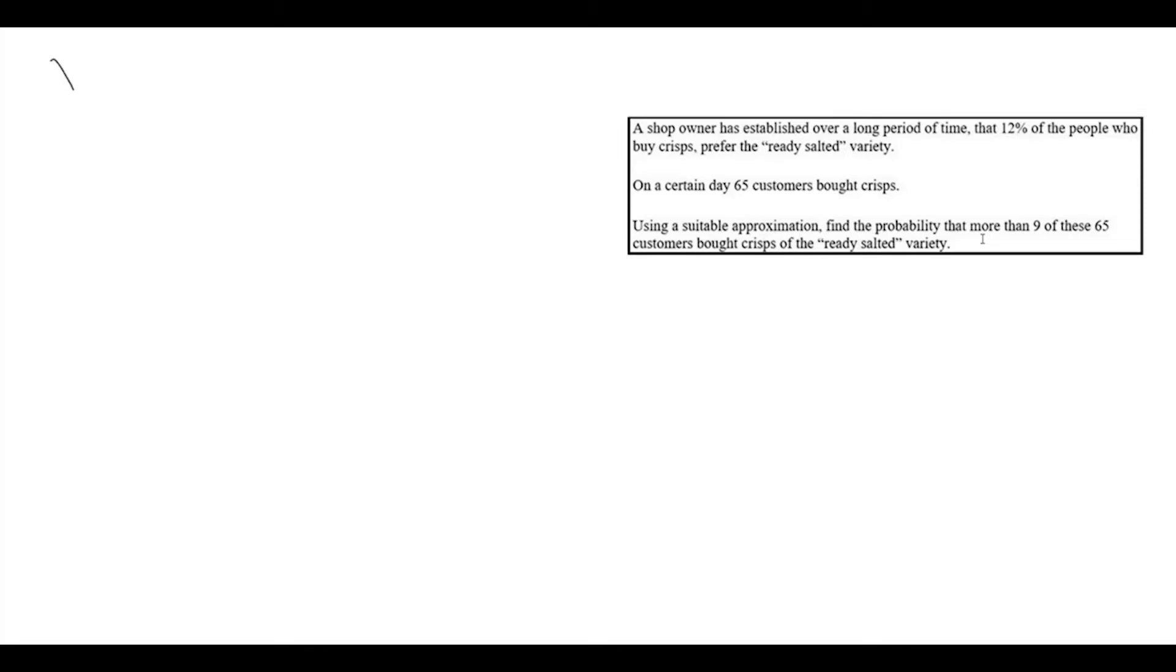It's just a binomial approximation to the normal distribution, so we'll do all of the standard things. Let's start with the binomial distribution: n is 65, p is 0.12. The expectation I get from multiplying those and we get 7.8.